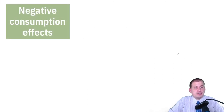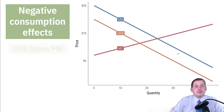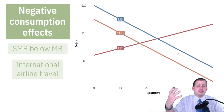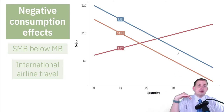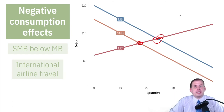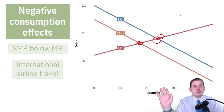You can also have negative consumption externalities, where by people consuming or purchasing something, it makes society worse off because it causes damage. International airline travel is a good example: when you take a long plane ride, you're causing damage to the environment and emitting more carbon. It's not a lot individually, but as it builds up over time, it makes society worse off. So we'd want to reduce that to a lower quantity — fewer miles traveled on an airplane — because there will be less damage to society. Those are the four types of externalities: positive and negative consumption externalities, and positive and negative production externalities.